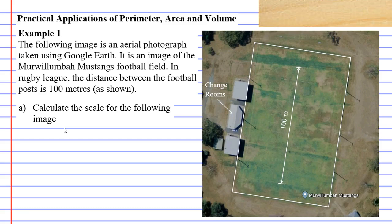In rugby league, the distance between the football posts is 100 metres, and I've marked the football posts at both ends and shown you the distance between them as 100 metres. In question A, they want us to calculate the scale for the following image.